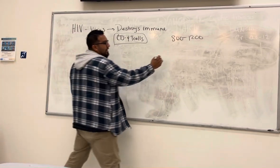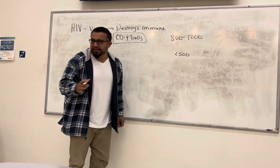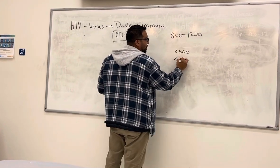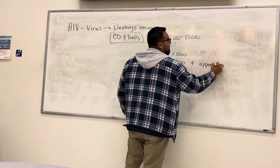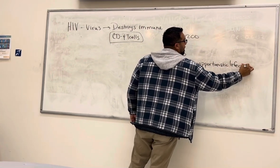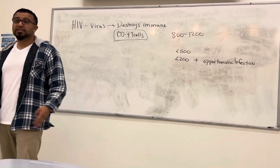HIV little by little destroys that count, and once that count goes below 500, you start manifesting some symptoms of immunological compromise, and then once it goes below 200, plus an opportunistic infection.